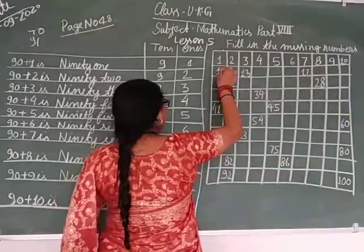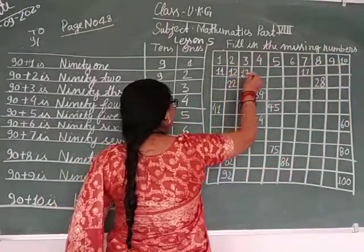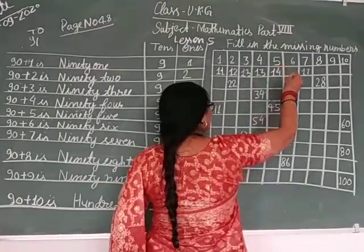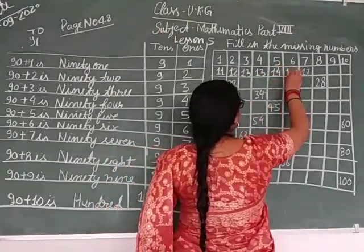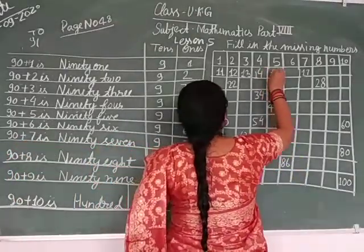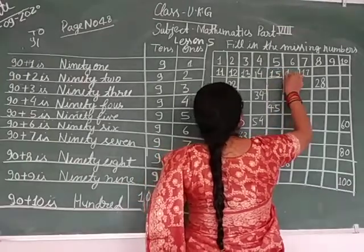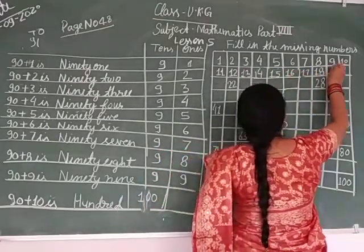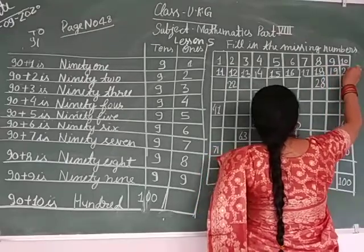Next is eleven, twelve. Now start: fourteen, fifteen, sixteen, seventeen, eighteen, nineteen, twenty.